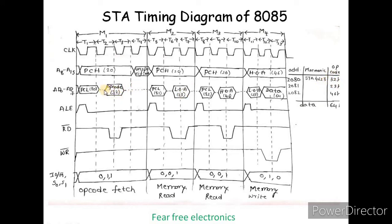The RD bar signal goes active low, which means a read operation is performed to fetch the opcode. Status signals S0 and S1 are both 1,1, indicating this is the first machine cycle — the opcode fetch cycle.